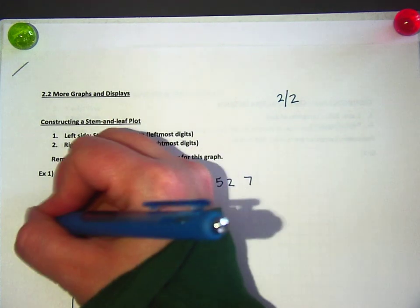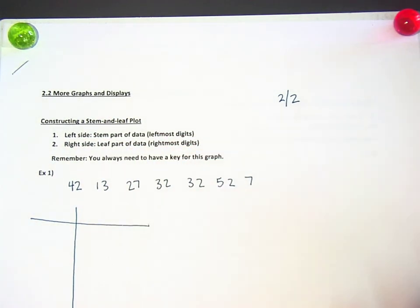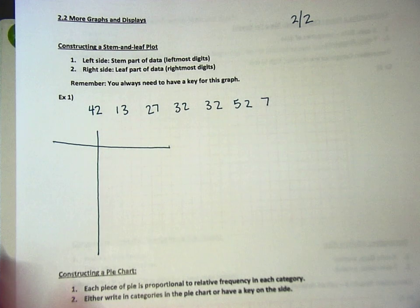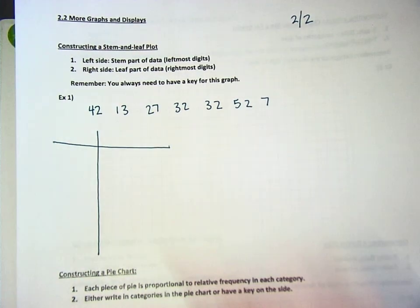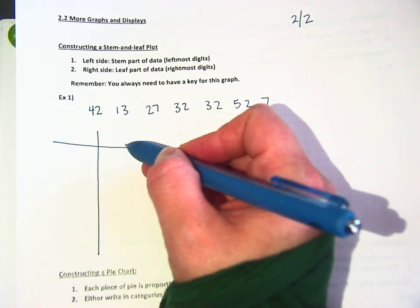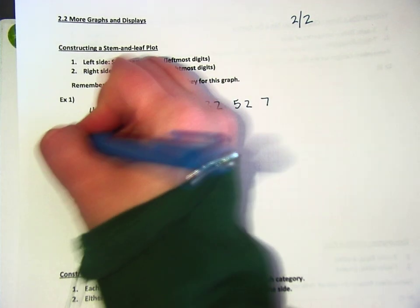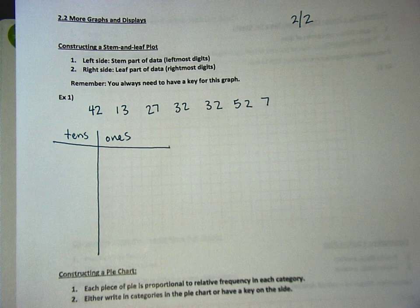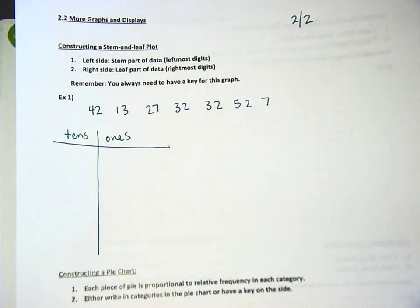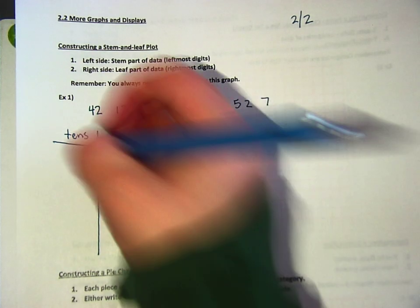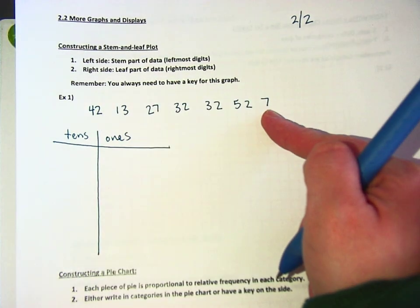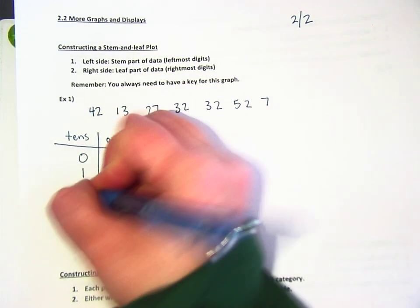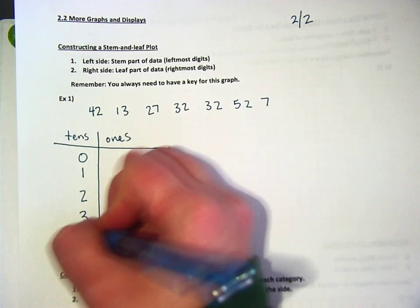Alright, so here's what a stem and leaf plot looks like. Kind of looks like a cross. You always have the larger value on the left and the smaller value on the right. In this case, it's going to be tens and ones. It's a way to organize data. It looks like my lowest number here is 7, and my highest number here is 52. So, what is the tens place with a 7? I'm going to write 0 here. So, 0, 1, 2, 3, 4, 5.